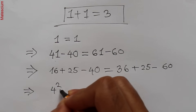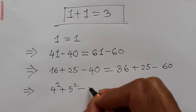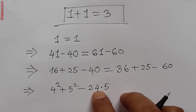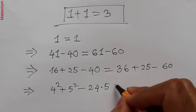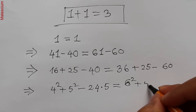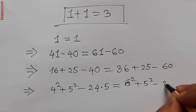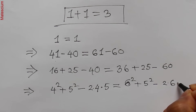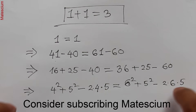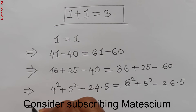Here, 16 is 4 squared and 25 is 5 squared, and minus 40 can be rewritten as 2 times 4 times 5. On the right side, 36 is 6 squared and 25 is 5 squared, and minus 60 can be rewritten as 2 times 6 times 5. There is no mathematical contradiction at this point.